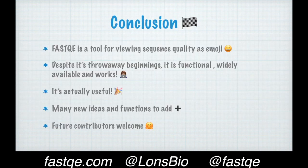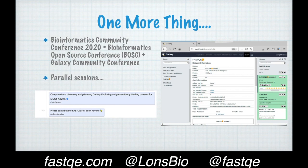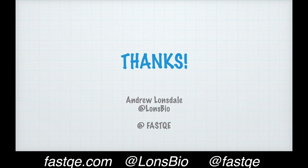In conclusion, FastQE is a tool for viewing sequence quality as emoji. Despite its throwaway beginnings, it's widely available and it works — so it's useful, I think. I've got many new ideas and functions to add to it, but I really need future contributors to help me out. FastQE does work on Galaxy, and getting this into the tool shed and working is something I'd really like some help with as well. So if you're interested, please get in contact. I hope you enjoy FastQE. Thank you.